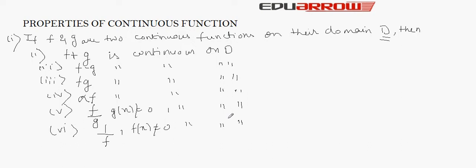From these facts, we conclude that by addition, multiplying, dividing, multiplying by a constant, or taking the reciprocal, there is no effect on the continuity of the function. If a function is continuous, after performing these operations the function will remain continuous.